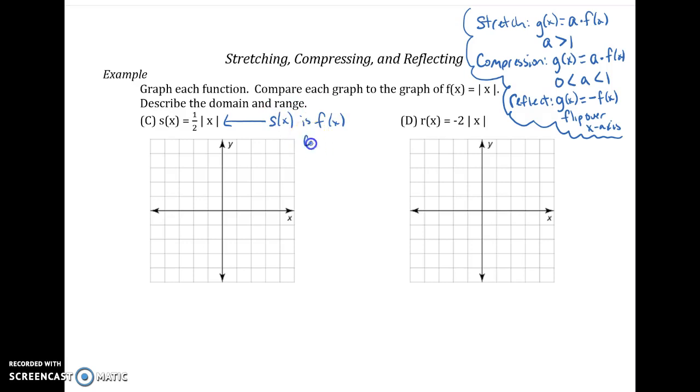So s of x is f of x compressed by a factor of 1 half. And this is going to be a vertical compression. So we are going to squish it down toward that x-axis. Let's go ahead and graph this thing.